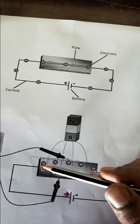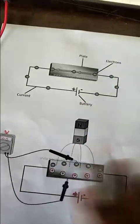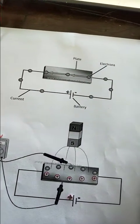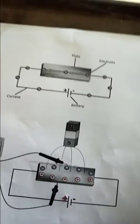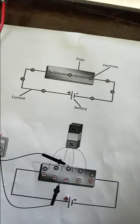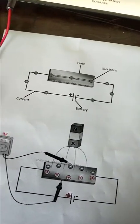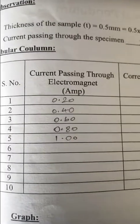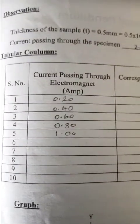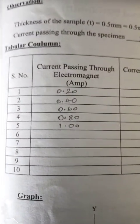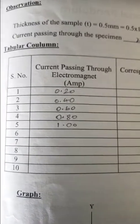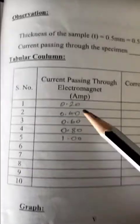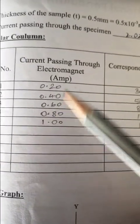Now let's go for the experimental method. I'll show you the table and how students have recorded data, and then start the experiment. The table contains: serial number, then current passing through the electromagnets. The student has taken 0.2, 0.4, 0.6, 0.8, 1.0 A — increasing by 0.2 each time.